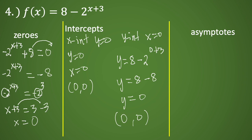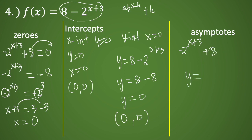Now let's find the asymptotes. Rearranging the function into the form a times b raised to x minus h plus k, we identify k as eight. Therefore, the horizontal asymptote is y equals eight.